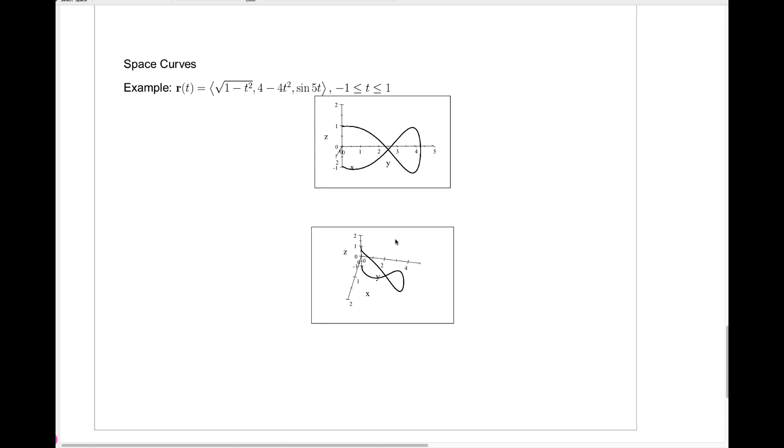Our final example here has a much more complicated shape. We're looking at r of t equals square root of 1 minus t squared, 4 minus t squared, and sine of 5t. t goes from minus 1 to 1. Now here you can see with the axes in the standard position, the x-axis here, the y-axis there, and the z-axis there, the curve looks very strange.